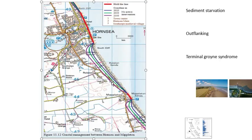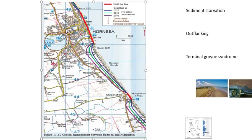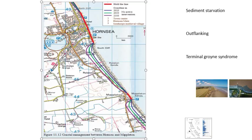When planners are considering what type of management to use, they've also got to consider future uncertainties: rising sea levels and increased frequency of storms. They need to run models and predictions. Taking Hornsea and Mappleton, where we've got a 'hold the line' hard engineering approach with seawalls and groins that trap sediment and create a wide beach, you can see predictions for how quickly the coast will erode and how quickly we get outflanking. The blue line shows the coastline predicted by 2025, the green line by 2055, and by 2105 we've got some severe outflanking happening.